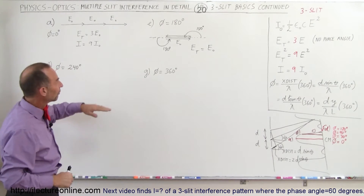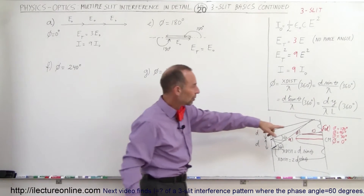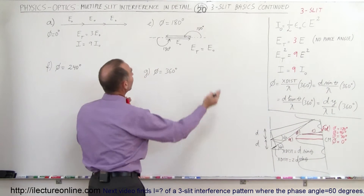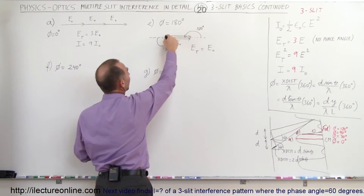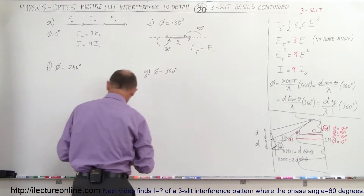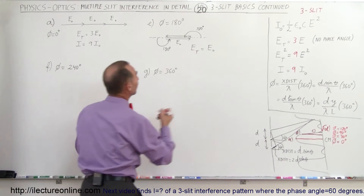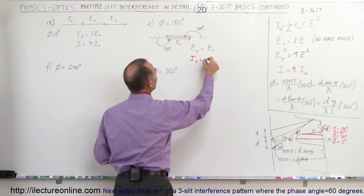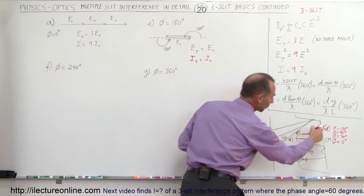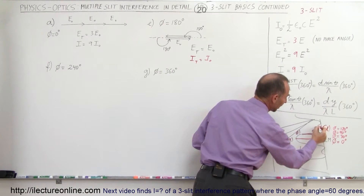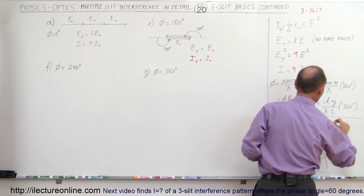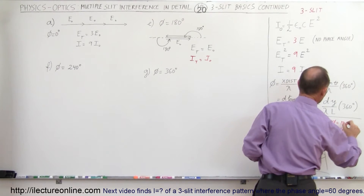When the phase difference was 120 degrees we had our first minimum. But at 180 degrees, the first ray is cancelled by the second, and the total energy equals the third one alone, which equals E sub not. Therefore I total is simply equal to I sub not. We get the small intermediary maximum — that's case E where the phase angle equals 180 degrees.